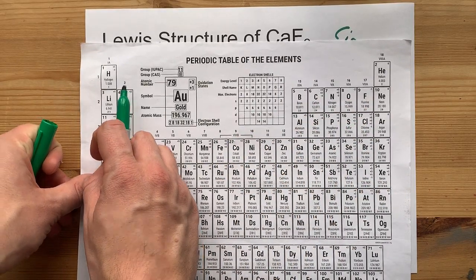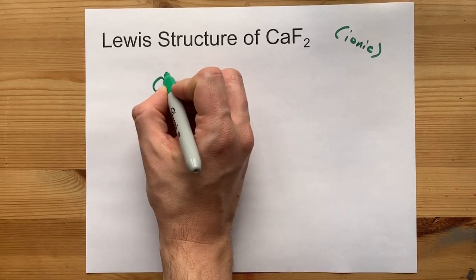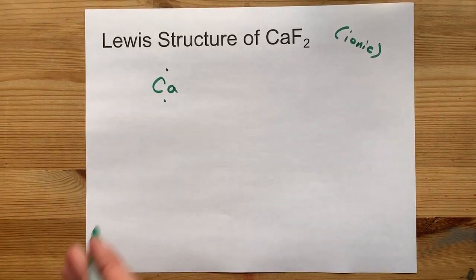Calcium is in group two, so it brings two valence electrons with it. One, two. Beautiful.